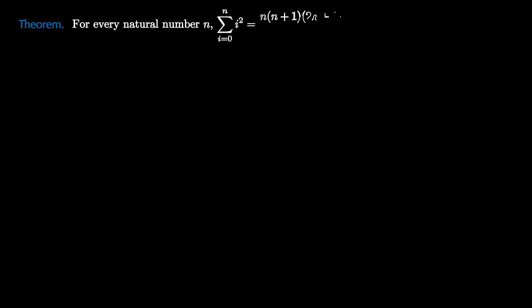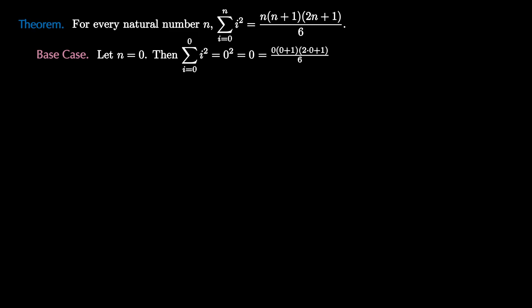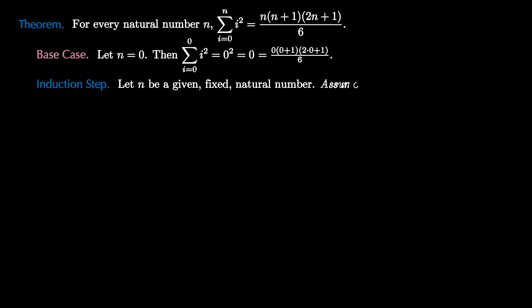Now we're ready to verify the sum of squares formula inductively. The theorem states that for every natural number n, the sum of i squared, where i ranges from 0 to n, equals n times n plus 1 times 2n plus 1, all over 6. For the base case, we let n equal 0, so the sum is just 0 squared, which is 0, and we verify this equals 0 times 1 times 1 over 6, since the numerator is 0. For the induction step, we let n be a given fixed natural number greater than or equal to 0 and make the major assumption that the sum of i squared from 0 to n equals n times n plus 1 times 2n plus 1 over 6.